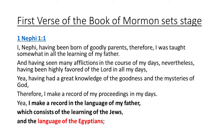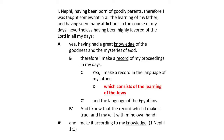We're still on 1 Nephi 1:1. We talked about the language of the Egyptians, and now we're focusing in on the learning of the Jews. Notice right in the very first two verses of the Book of Mormon, you get a nice little chiasm with the very center of it being the learning of the Jews. Everything we're discussing here today focuses on things the Jews understood — descendants of the Jews wrote these records, and it's important to understand how they thought and spoke.